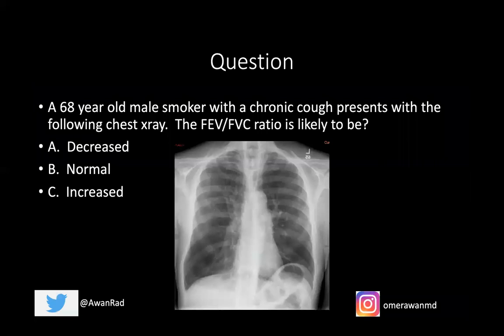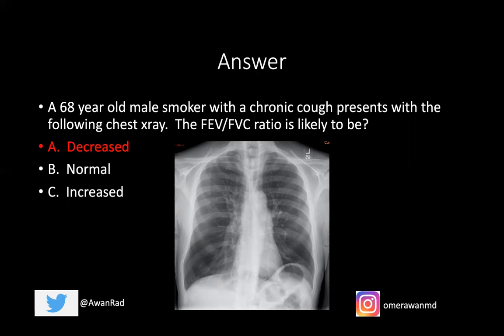Coming back to the question: the 68-year-old male smoker — smoker is the key here, as emphysema is associated with smoking — with a chronic cough presents with this chest x-ray showing hyperinflated lungs and hyperlucency, consistent with emphysema. The FEV1 over FVC — forced expiratory volume over forced vital capacity — is going to be decreased. It's decreased in all forms of obstructive lung disease. This is a very high-yield question, similar to one on the actual USMLE exam.